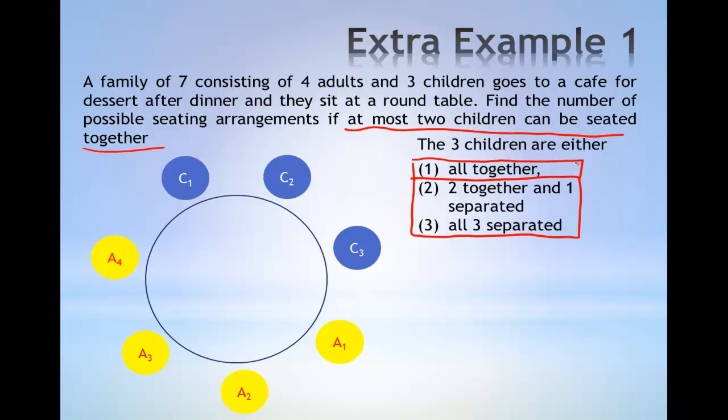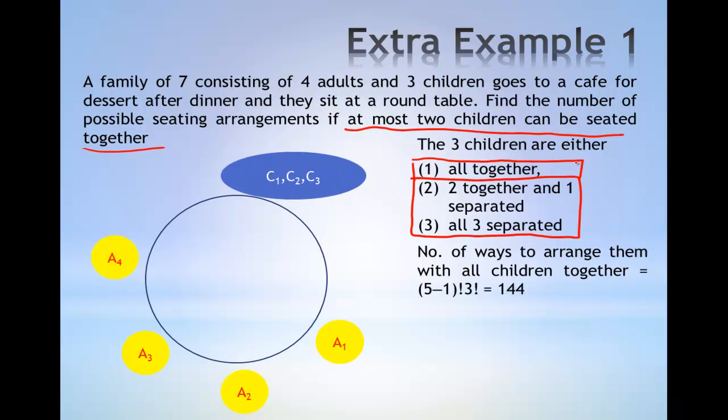Consider the seven individuals seated around the table. The number of ways to arrange all three children together is given by grouping the three children together as a single unit, which gives five units.